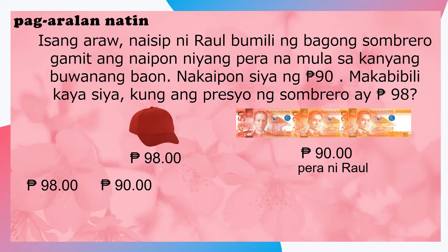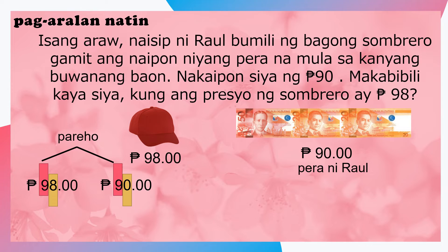Tandaan mo, kapag tayo ay maghahambing at pareho ang mga unang digits, paghahambingin natin ang kasunod na digit. At ano ba ang kasunod nilang digit? Ito ay ang 8 at ang 0. Sa 8 at sa 0, ano ang mas malaki? Tama! Ito ay ang 8. Kung ganoon, lalagyan natin ito ng simbolong greater than, kasi mas malaki ang 8 kaysa sa 0.